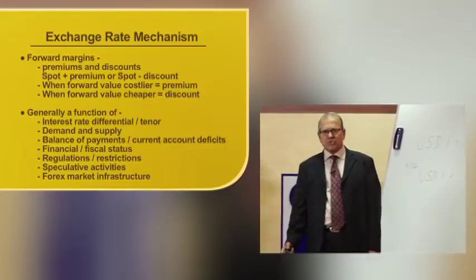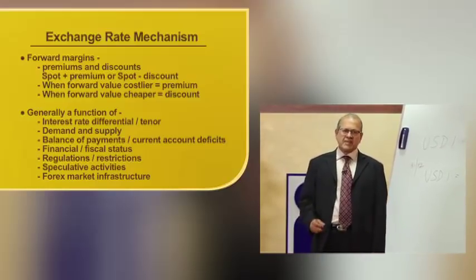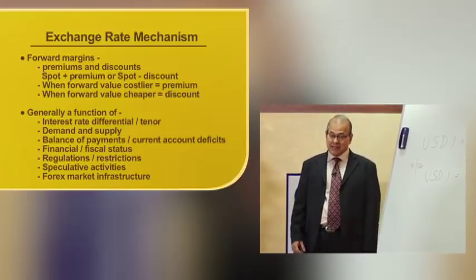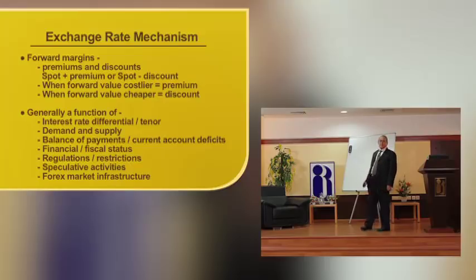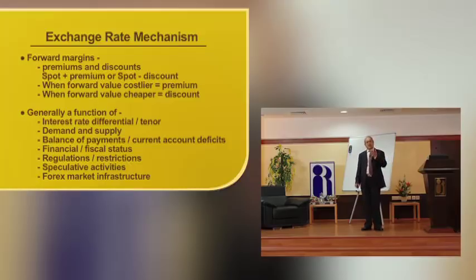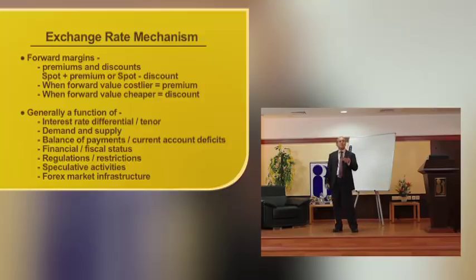Next is demand and supply, which is true of any commodity. If supply is more, the commodity becomes cheaper; if supply is less and demand is more, it becomes costlier. We have already discussed balance of payments and current account deficits. Then financial and fiscal status, which is born out of the monetary and fiscal measures already discussed.